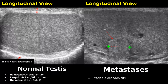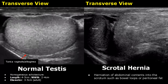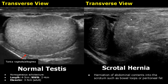Here is an image of scrotal hernia — there is herniation of abdominal contents into the scrotal sac. Usually peritoneal fat or bowel loops are herniated. Here we see peritoneal fat next to the testis in the scrotal sac.